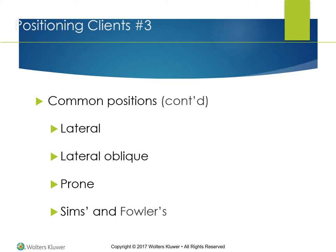In the Sims position, a semi-prone position, the client lies on the left side with the right knee drawn up toward the chest, an arm positioned along the client's back, and the chest and abdomen allowed to lean forward. The Sims position is also used for examination of and procedures involving the rectum and vagina. Fowler's position, a semi-sitting position, makes it easier for the client to eat, talk, and look around. Three variations exist: low Fowler's (30 degrees), mid or semi-Fowler's (up to 45 degrees), and high Fowler's (60 to 90 degrees). The Fowler's position is especially helpful for clients with dyspnea because the abdominal organs drop away from the diaphragm, allowing a greater volume of air exchange. Prolonged sitting, however, decreases blood flow to the coccyx area and increases the risk for pressure ulcers.